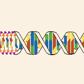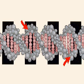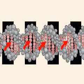Within each molecule, two interwoven twisted strands, shown here in gray, are held together by cross linkages, shown in red, to form a spiral ladder.